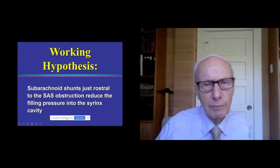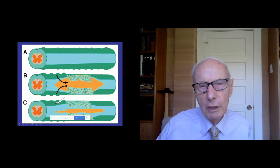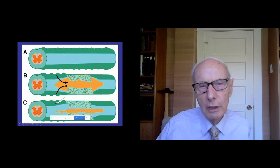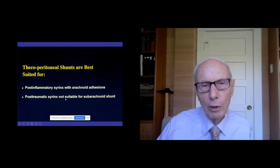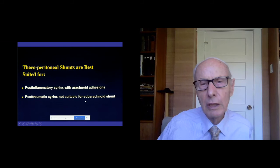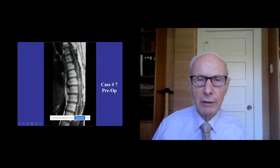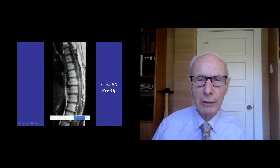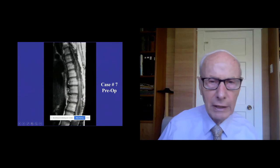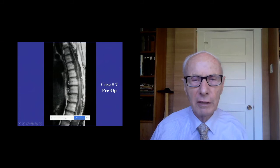I recall one patient where this procedure made the difference between being able to use his index finger to control the mechanical device for moving his wheelchair — a big difference. This artist illustration shows how we divert fluid from above the level of the scar, resulting in shrinkage of the syrinx cavity. Thecoperitoneal shunts are best for post-inflammatory syrinx with arachnoid adhesions, or for post-traumatic syrinx not suitable for subarachnoid approach.